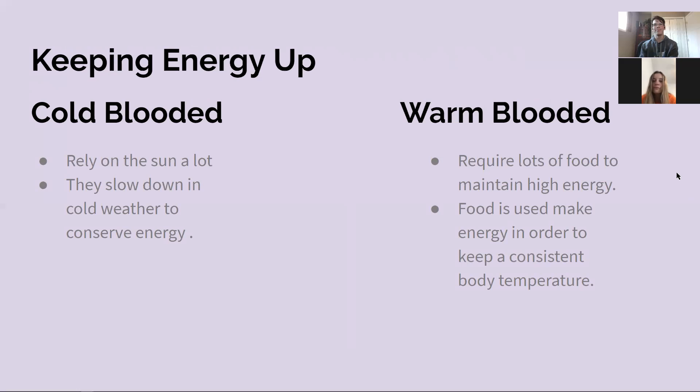Some ways that cold-blooded animals keep their energy up would be using the temperature around them. They rely on the sun a lot and slow down in cold weather to conserve energy. Warm-blooded animals require lots of food to keep up high energy. The food they eat is used to make energy and maintain their consistent body temperature.